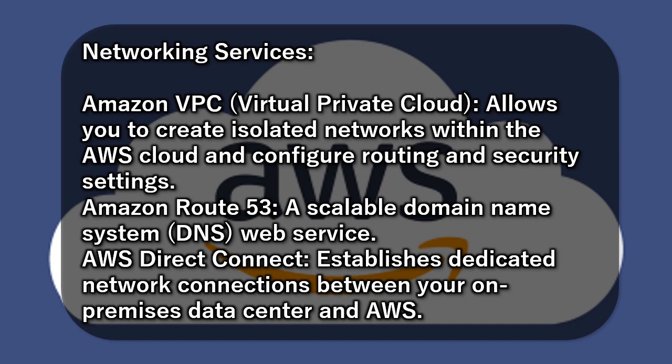Networking Services: Amazon VPC (Virtual Private Cloud) allows you to create isolated networks within the AWS cloud and configure routing and security settings. Amazon Route 53 is a scalable domain name system (DNS) web service. AWS Direct Connect establishes dedicated network connections between your on-premises data center and AWS.